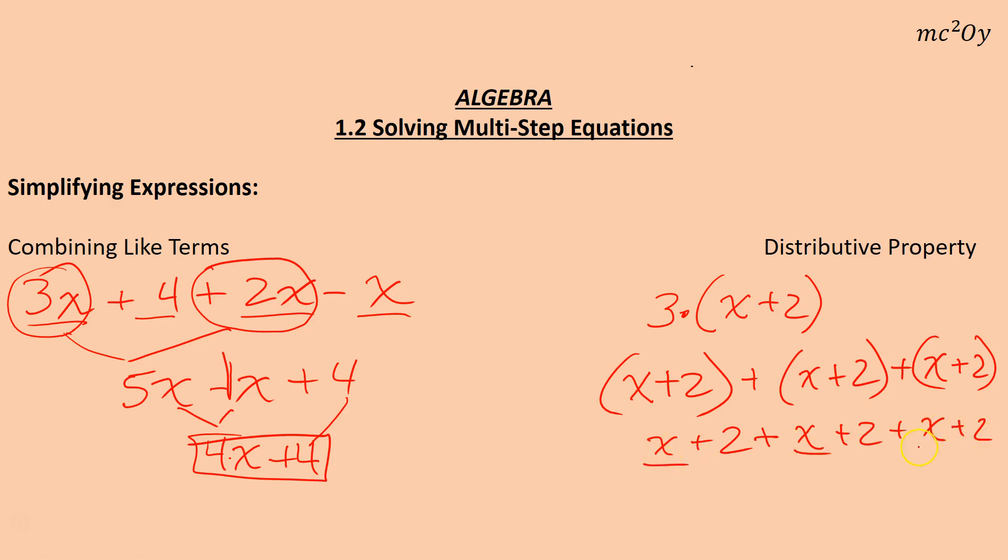And then I can think about having these things next to each other. So I have x plus x plus x, and then I have 2 plus 2 plus 2. So really that means I have 3x's plus 6. 3x plus 6.